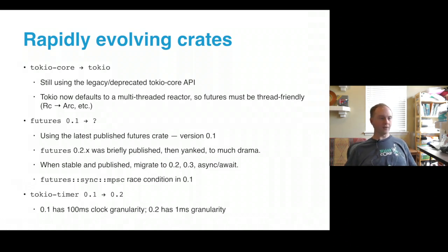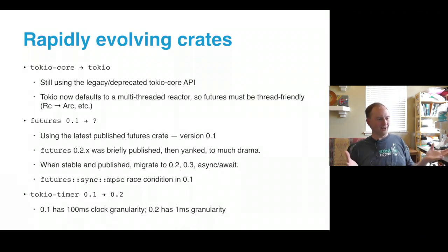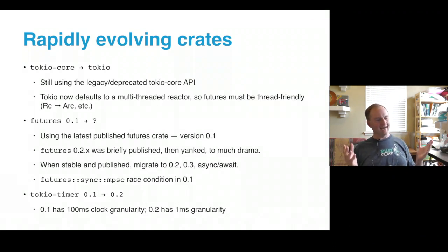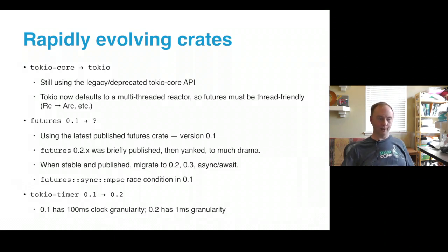Tokio Timer — I used it when it was 0.1 and I'm still using 0.1. I had no idea at the time it has such a crummy clock granularity: 100 milliseconds, a tenth of a second, is not really suitable for network protocols. Unfortunately 0.2 has one millisecond granularity, so I definitely need to upgrade that at some point.